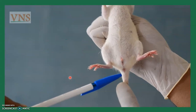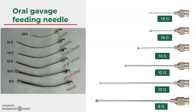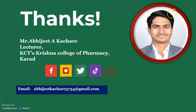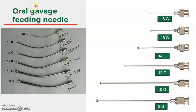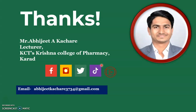The oral needles come in various sizes from 8G to 18G — choose according to the animal. I hope you have understood this experiment. If you have any doubts, please message me. This complete experiment will help you to conduct your viva on this topic. Thank you.